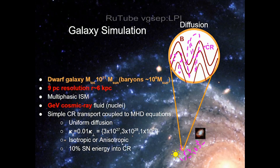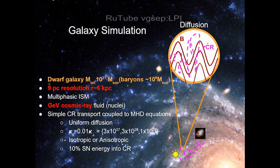We're simulating a dwarf galaxy with a total mass of 10^11 solar masses at a very high resolution of 9 parsec, which is high resolution for simulations but still very coarse for modeling cosmic ray particle evolution. We also resolve the ISM, and we take the cosmic rays as a fluid corresponding to the low energy range — the GeV range.